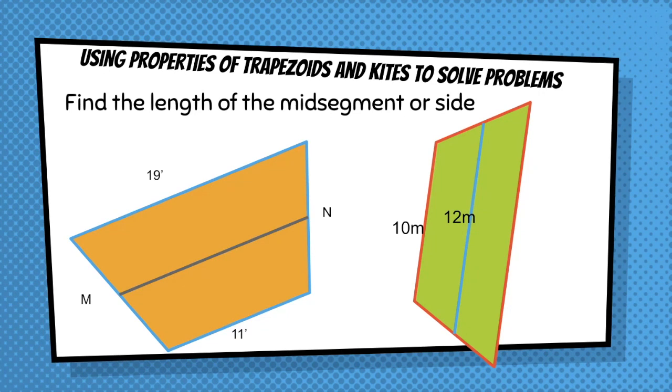So recall that the mid-segment, the length of the mid-segment, I should say, is the average of the length of the two bases. So 19 plus 11 is 30 divided by 2 is 15. Don't forget your units, feet.